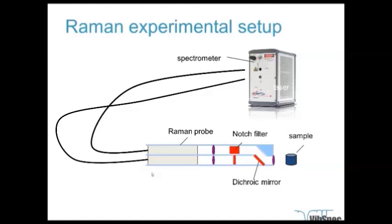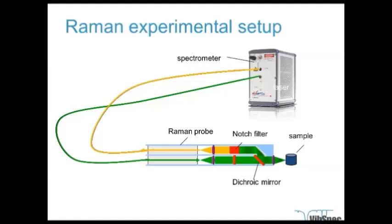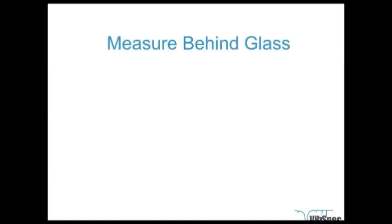For a Raman spectrometer setup, one major issue is that the number of Raman photons is much smaller than the number of Rayleigh scattering photons. We must filter out the Rayleigh wavelength — otherwise it overwhelms the signal. The longer wavelength Raman photons are then detected in the spectrometer, giving an intensity at each frequency to produce the Raman spectrum. A key advantage of Raman over infrared spectroscopy is that you can measure the same fundamental vibrations through glass, which is a strong infrared absorber but transparent to visible light.